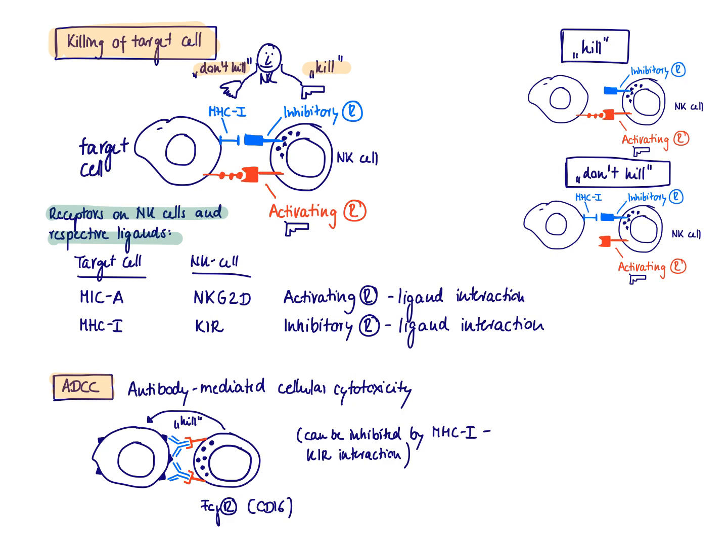The NK cell is equipped with FC-gamma receptors, and those FC-gamma receptors that the NK cell expresses are called CD16. So once there is engagement with the FC-gamma receptor with the antibody covering the target cell, this is also going to be an activating signal, meaning that this is going to drive killing of the target cell by the NK cell.